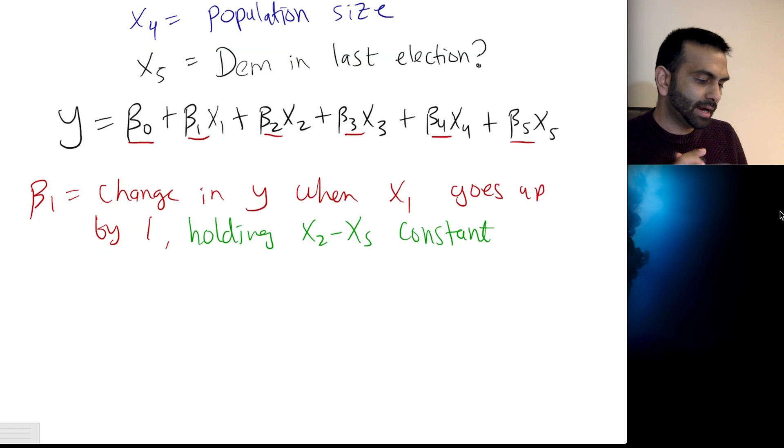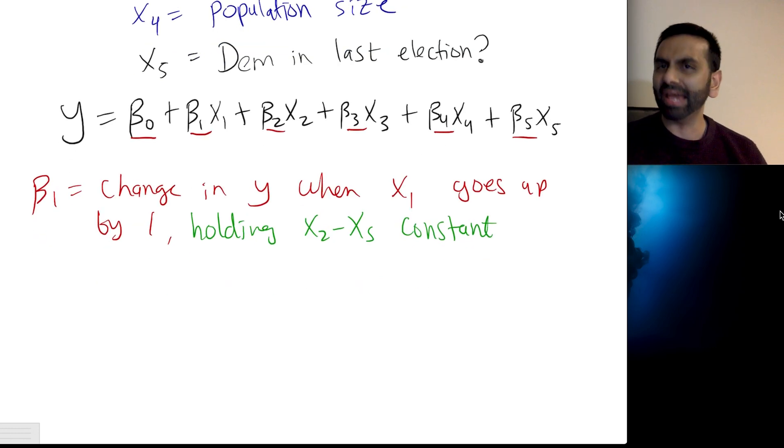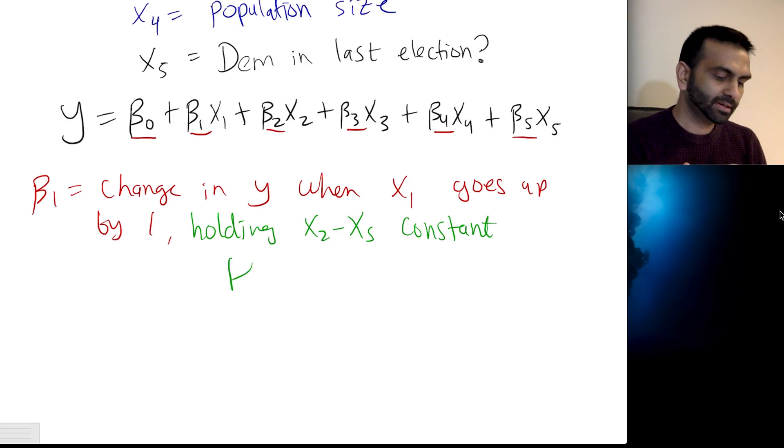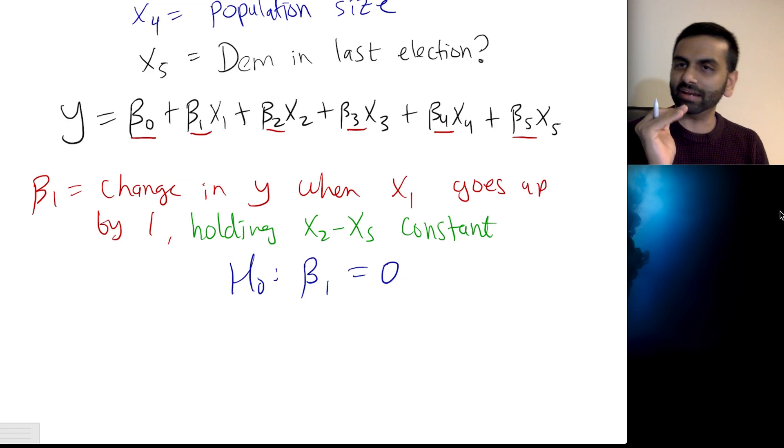So what that means is it's saying when that state gets one more police officer, how does that impact the crime rate, holding everything else constant, meaning even if holding the income, the years of schooling, the population size, and the political status, for all that being the same, if you just have one more police officer, how does that impact your crime rate? So that's what this means. So it's a pretty powerful thing because it's not just saying, oh yeah, but what if you're also changing these other things as well, this is saying even holding those out, controlling for those, how does that one variable affect your output, even for the same values of all the other variables.